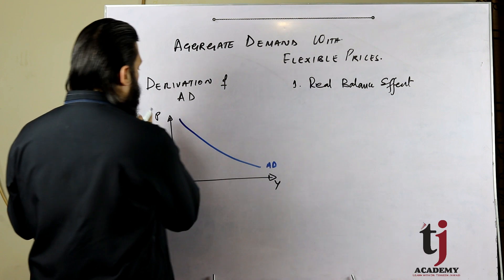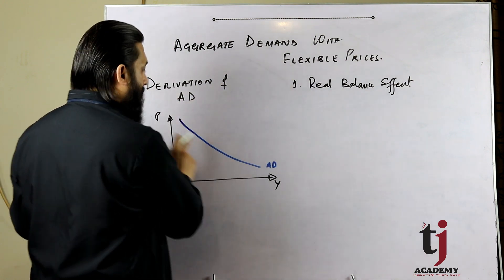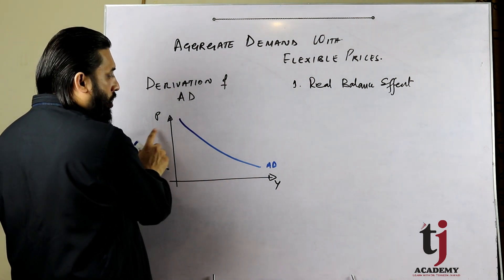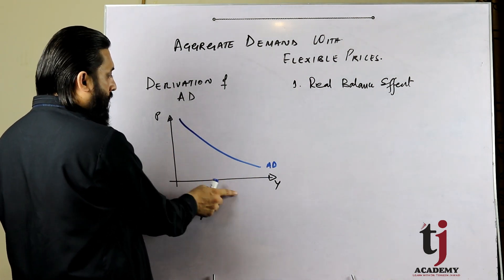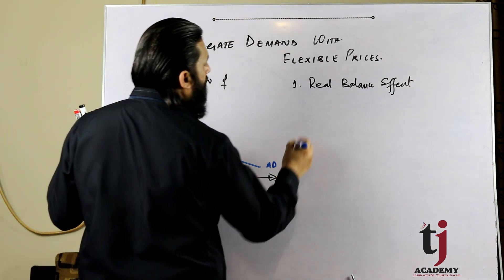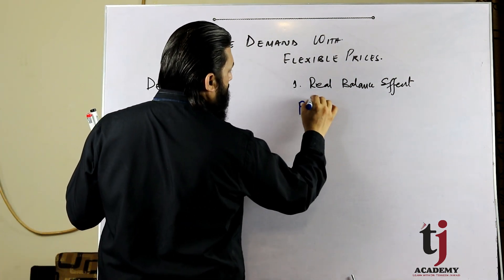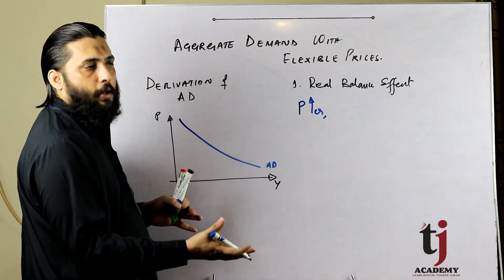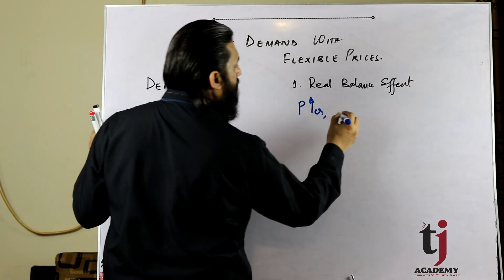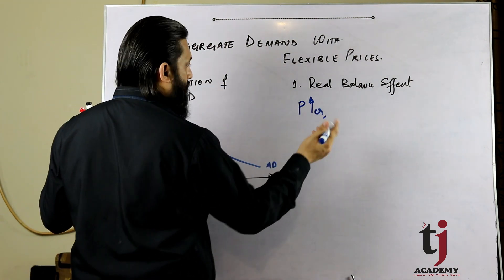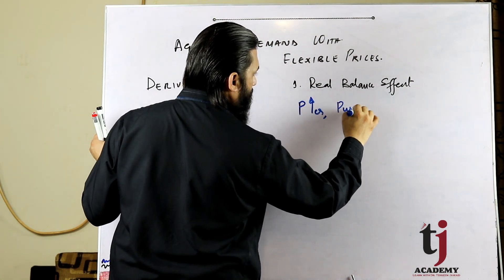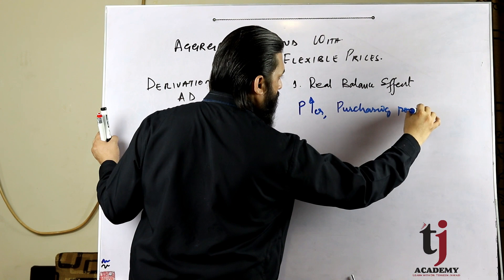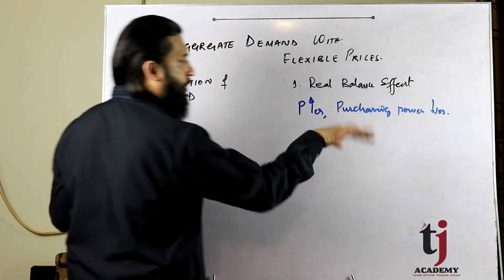We will see that aggregate demand has a negative slope - a negative relationship between price level and quantity demanded. Price increase hogi to, given amount of money, purchasing power kam ho jati hai.